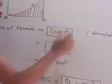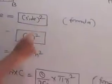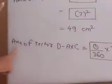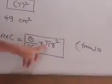First, area of the square. The formula is side square. Side is given as 7. So 7 square equals 49 cm square.